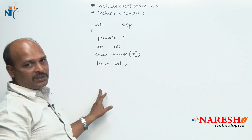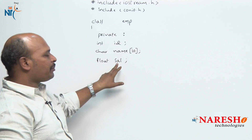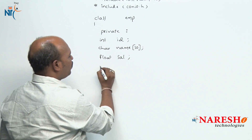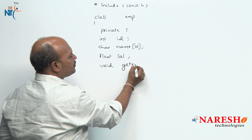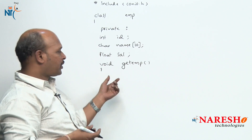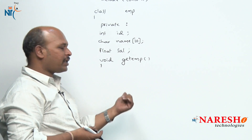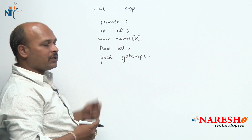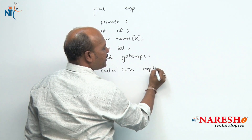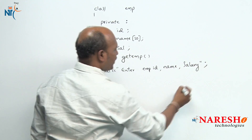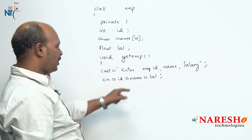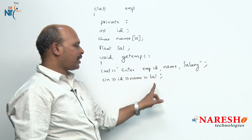These are the three data members: employee id, employee name, and employee salary. To access this private data we write member functions, so here we have void get_employee. We are performing the function definition inside the class. Inside get_employee: cout to prompt entering employee id, name, and salary, then cin for id, name, and sal. Now we are entering employee id, employee name, and salary.